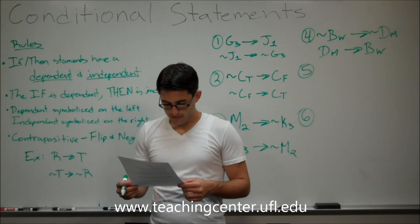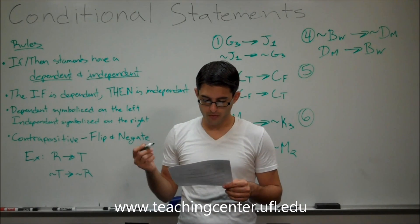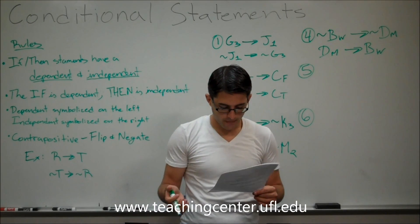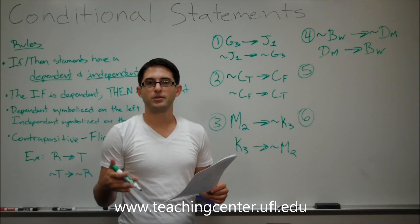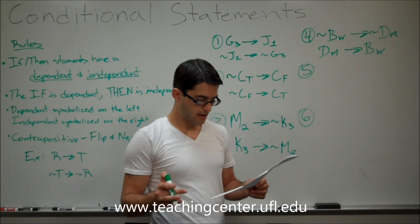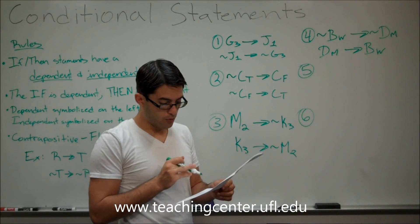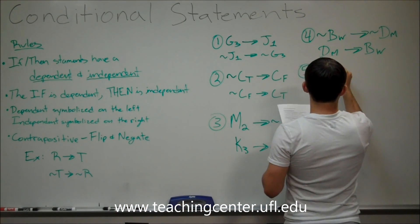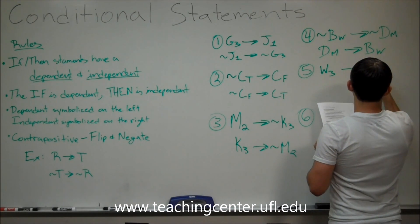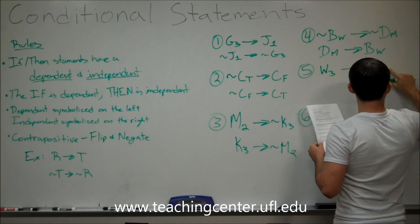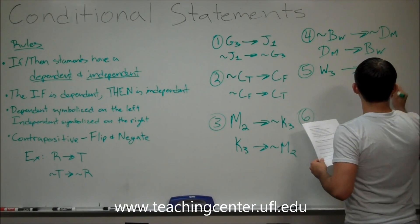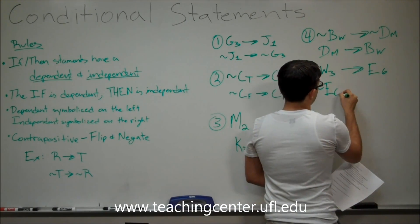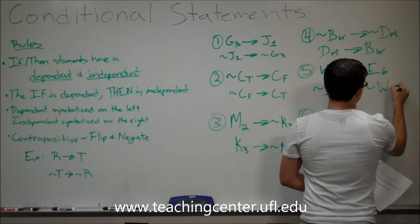Number five reads: Eric finishes sixth if Walter finishes third. In this one, they flipped it around — it's not a straightforward if-then, but they still have an if, which gives away which statement is the dependent one. You can rearrange it to: if Walter finishes third, then Eric finishes sixth. Symbolized as W3 arrow E6. The contrapositive is: if Eric does not finish sixth, then Walter does not finish third.